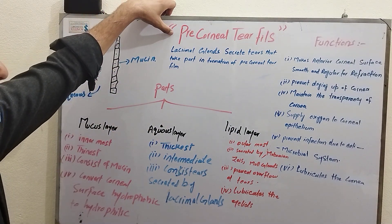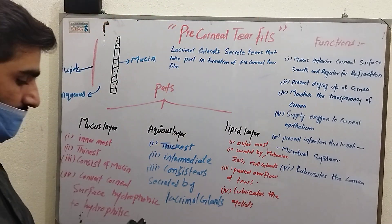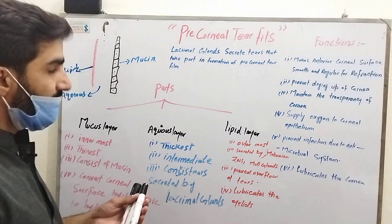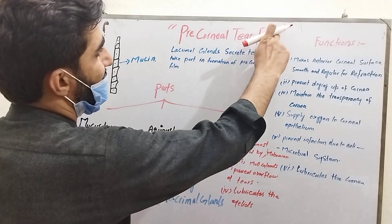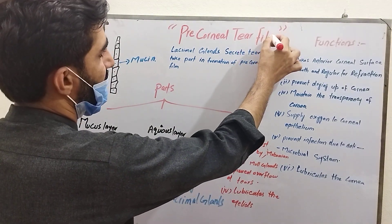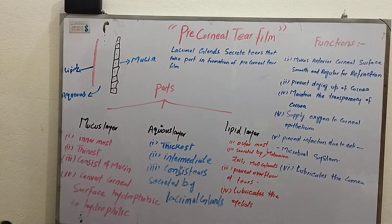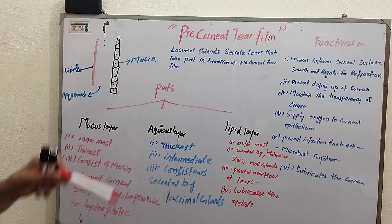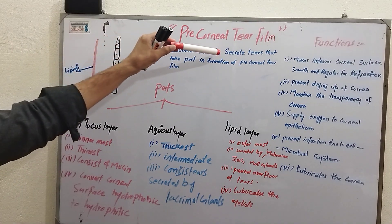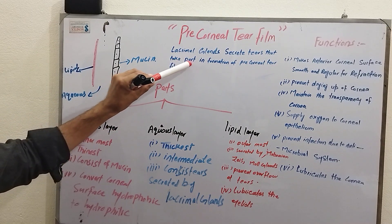Today our topic of discussion is pre-corneal tear film. We will discuss basically what is the definition of pre-corneal tear film. The lacrimal glands secrete tears that take part in the formation of pre-corneal tear film.